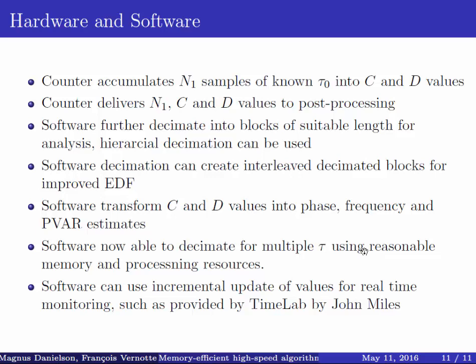Now, the software then does the transformation into phase frequency and parabolic, just trivial stuff. You don't let the hardware do that. Because as soon as you do that, you cannot decimate it further. You want the pure C and D values to extend it properly. Now, the software is able to do multiple taus. So, if you try to use such a counter today, you only get the tau you get. Now, we can do multiple taus without colorization.